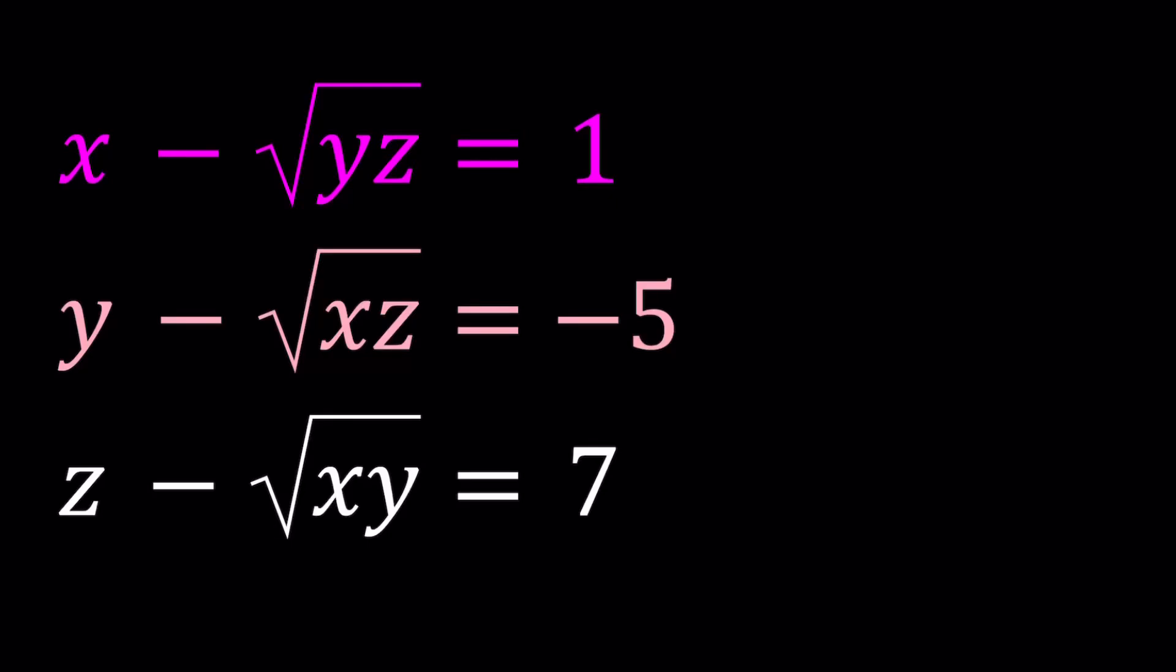Hello everyone. In this video, we're going to be solving a very nice system of equations. We have the following equations and we're going to be solving for x, y, and z. So we have x minus the square root of yz equals 1, y minus the square root of xz equals negative 5, and z minus the square root of xy equals 7.